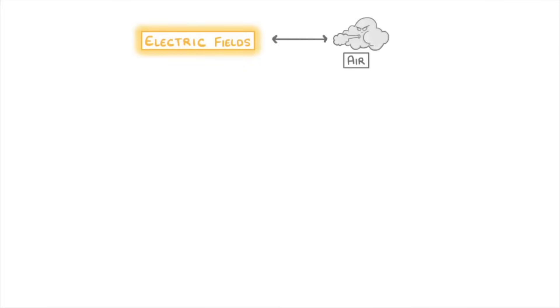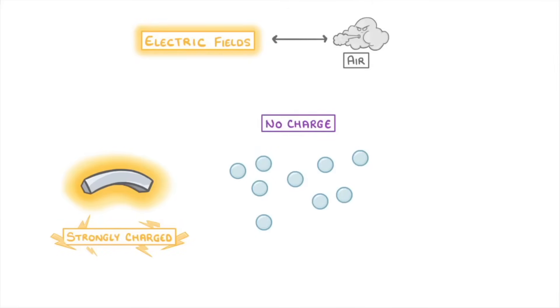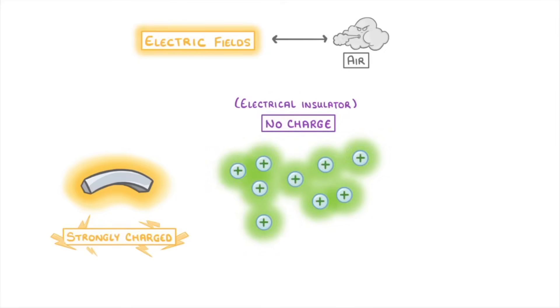One last thing we need to cover is the strange interaction between electric fields and air. If we had an object that was really strongly charged, like this piece of metal, then it would have a strong electric field all around it, whereas the nearby air particles would have no charge. In this state, air is an electrical insulator and can't conduct any electricity. However, in some cases a strong electric field, like the one around our piece of metal, can cause the surrounding air particles to lose electrons and become positive ions. We call this process ionization. And once air has been ionized like this, it's able to conduct electricity, and this is how sparks are able to travel between objects, traveling straight through the air.